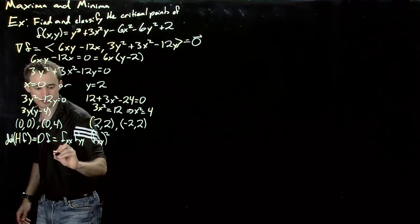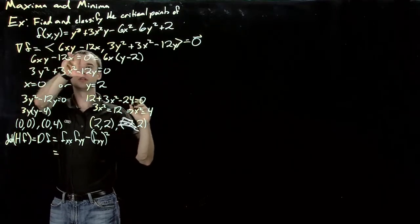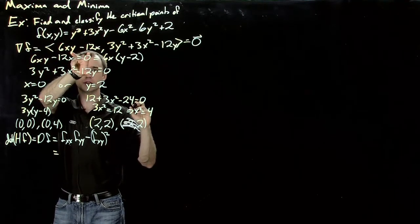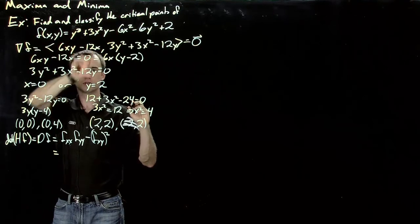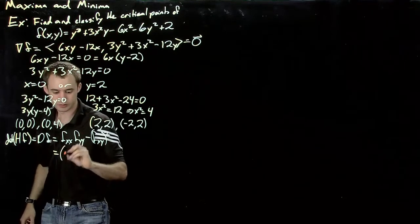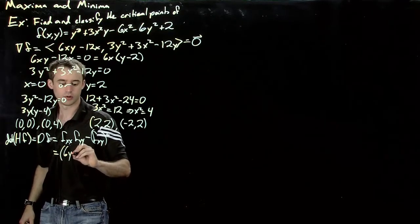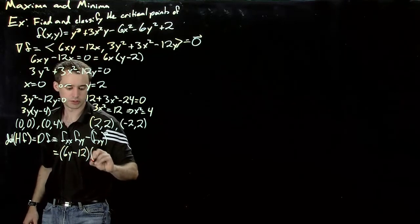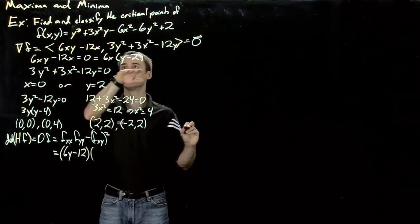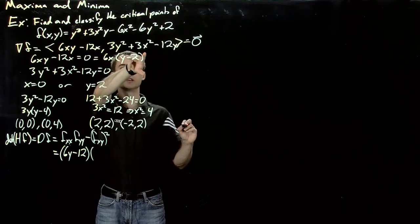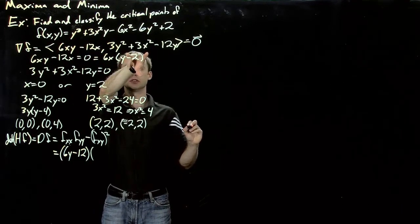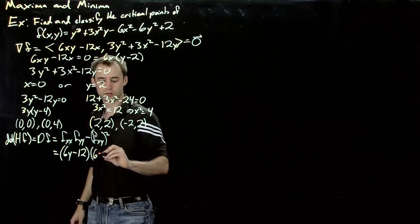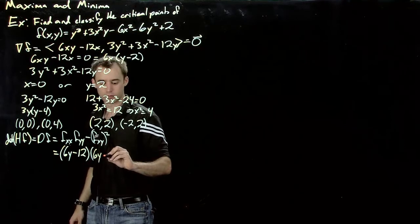So I need the second derivatives. Now, second derivative of this has got to be 6y minus 12. 6y minus 12. And now I want to take the derivative of, with respect to y, of this guy.